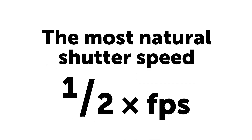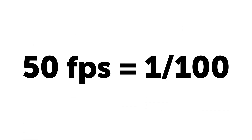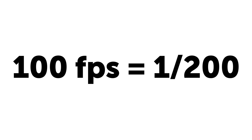The rule of thumb is that the most natural shutter speed setting is one divided by twice the framerate. So for 25 FPS, that means 1/50th. For 50 FPS, that means 1/100th. And for 100 FPS, that means 1/200th, and so forth.